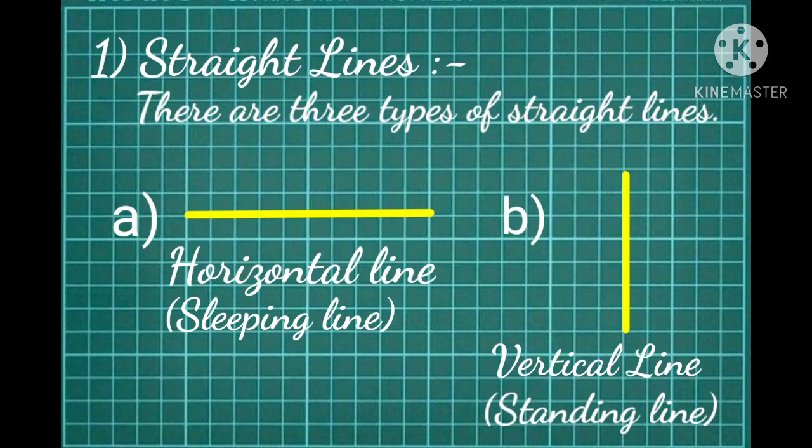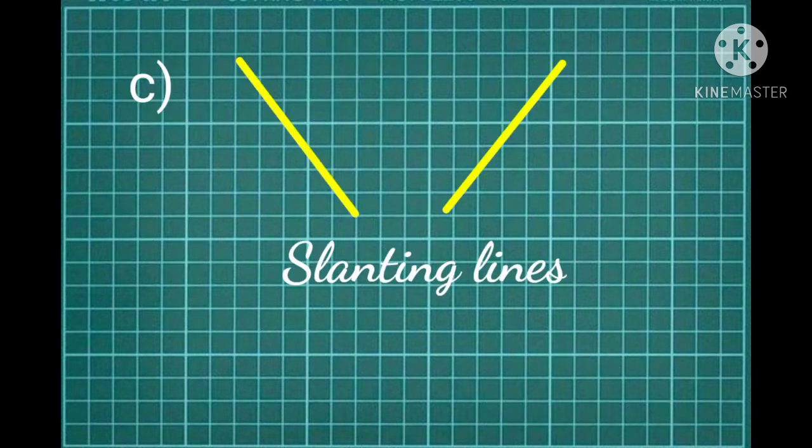Now let's study about straight lines. A straight line is just a line with no curves. There are three types of straight lines. First one is horizontal line, also called as slipping line. Second one is vertical line, also called as standing line. And the third one is slanting lines. Slanting lines can be extended in any direction.